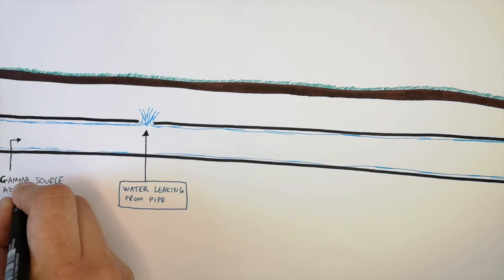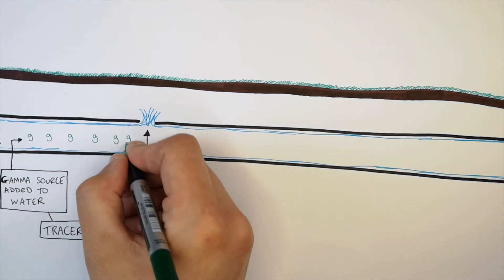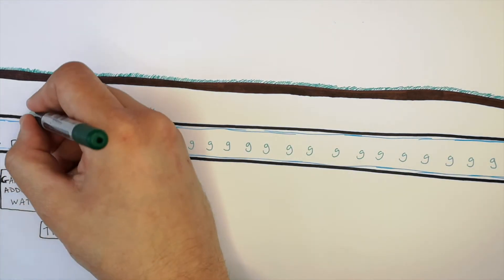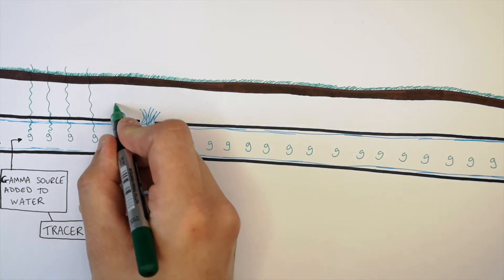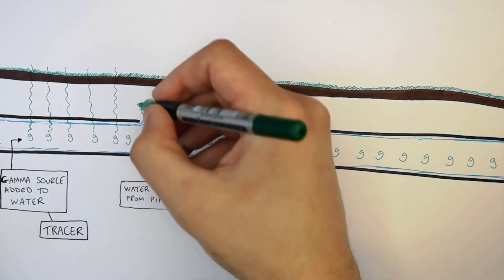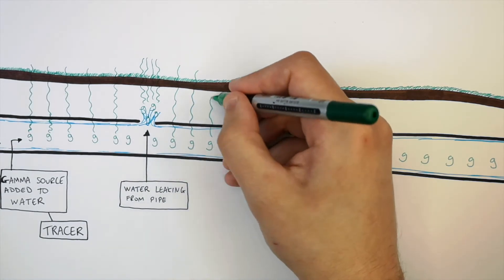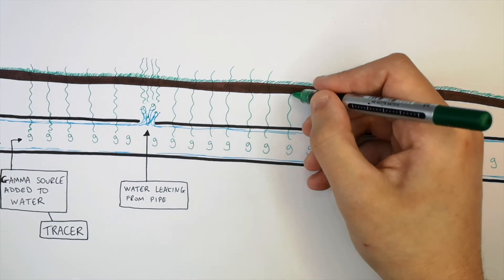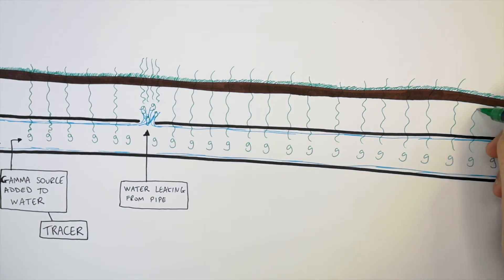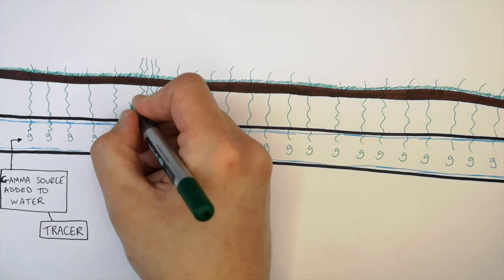A gamma source is then added to the water. The gamma source is known as a tracer. Because you've added a gamma source to the water, you're going to find the radioactive isotopes in the water inside the pipe. Where there is no leak, the tracer in the water is going to continue flowing — it's not going to collect. However, where there is a leak, the water is going to be collecting in the soil below the ground, meaning you're going to have increased radioactivity at that point. The longer the water is leaking out of the pipe, the more gamma sources are collecting just below the ground.